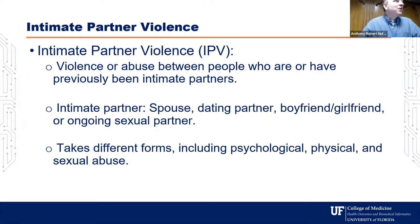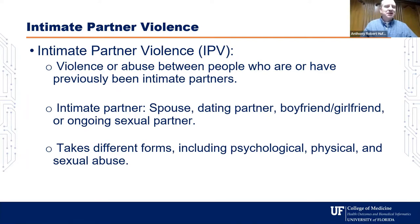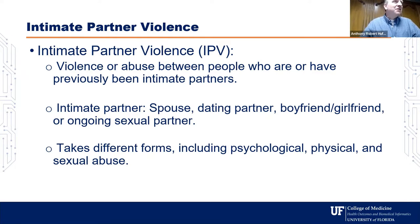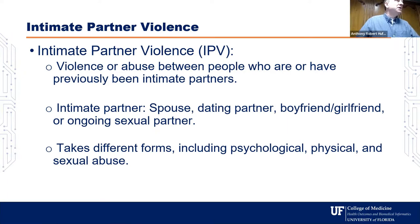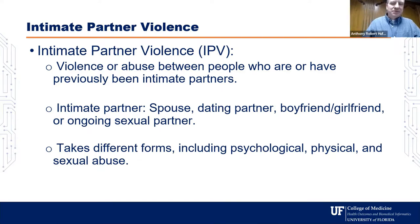As defined by people working in the field, intimate partner violence is violence or abuse between people who are or previously have been intimate partners — slightly circular. But if we then define intimate partner and violence, we can sort of unravel that circularity a bit. So an intimate partner is a spouse, a dating partner, boyfriend, girlfriend, or ongoing sexual partner. And the violence can take different forms — not just limited to physical or sexual abuse, but also psychological, emotional, or mental abuse.